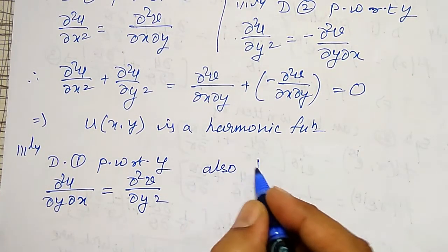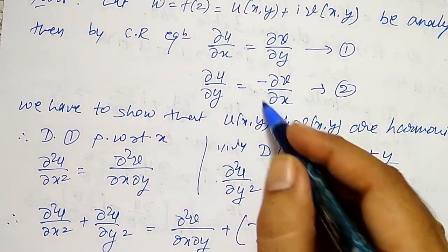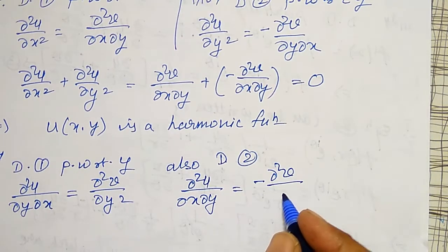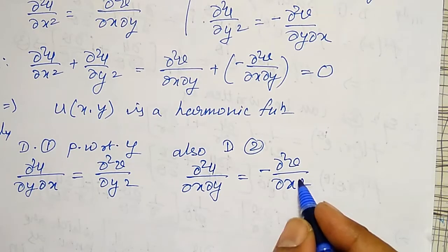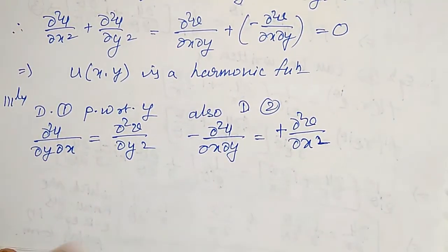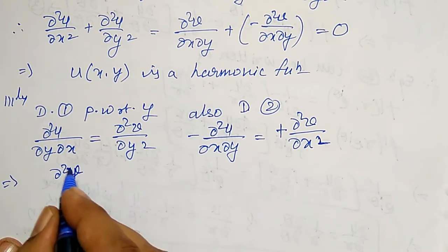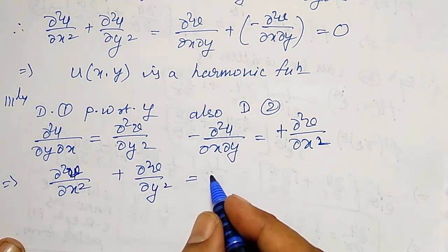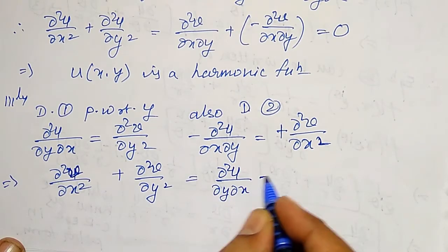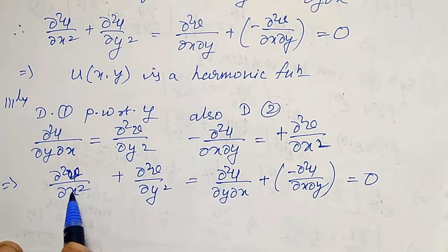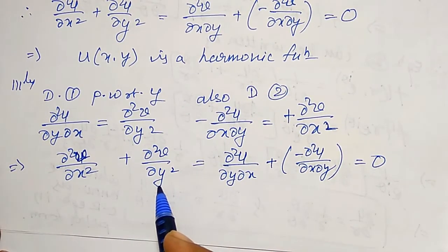Also, to get dou²v/dou x², I differentiate CR equation two partially with respect to x: dou²u/dou x dou y = −dou²v/dou x². Rearranging, this becomes dou²v/dou x² = −dou²u/dou x dou y. Adding these two results: dou²v/dou x² + dou²v/dou y² = −dou²u/dou x dou y + dou²u/dou y dou x. Since mixed partials are equal, they cancel, giving dou²v/dou x² + dou²v/dou y² = 0.